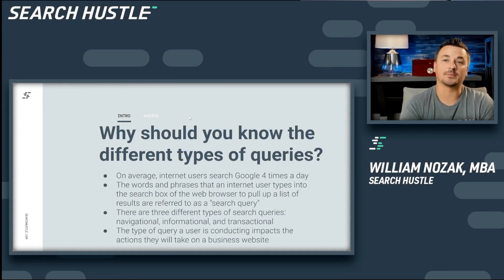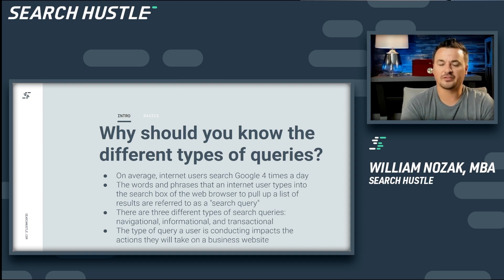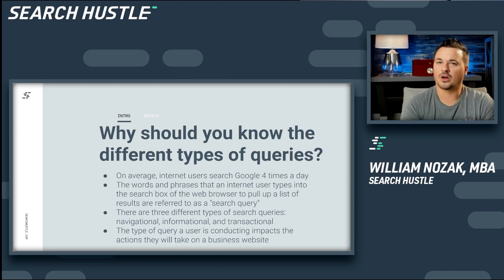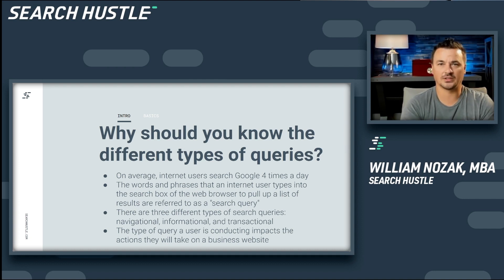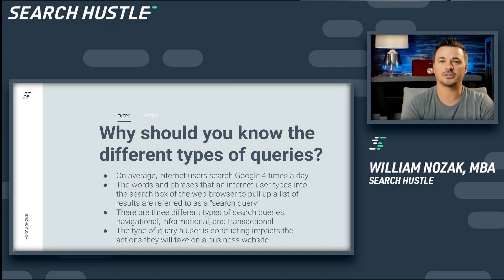Why should you know the different types of queries? There are three types of queries: navigational, informational, and transactional. Navigational and informational are a little less closer to the bottom of the funnel than a transactional. Usually in informational, people are kind of researching — they're at the top of the funnel, or may be at the middle of the funnel. Navigational is when you need to find locations — get to the movie theater, find the local this or that. Those are also great searches, especially if people are trying to find you to come in and buy from your store.